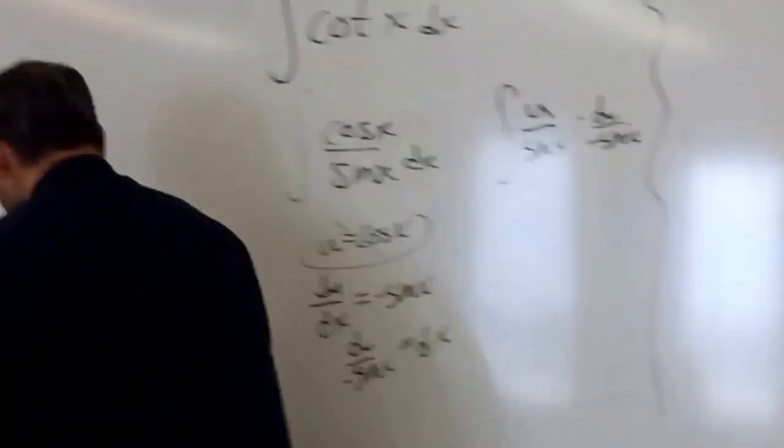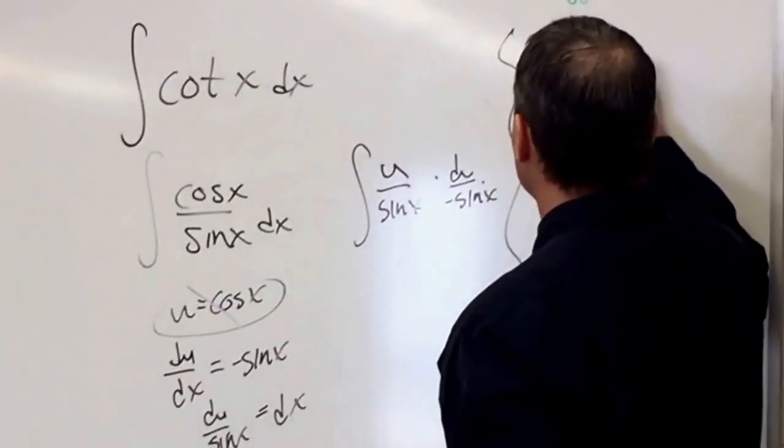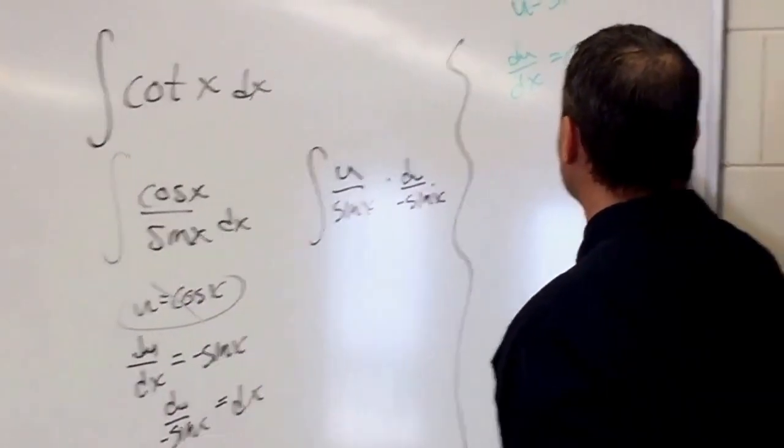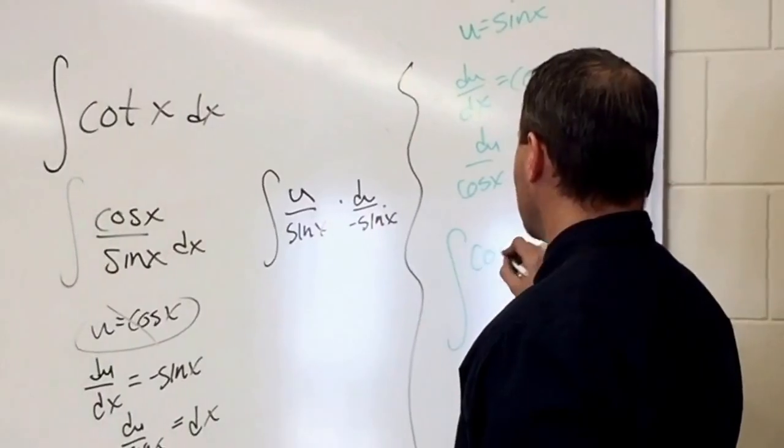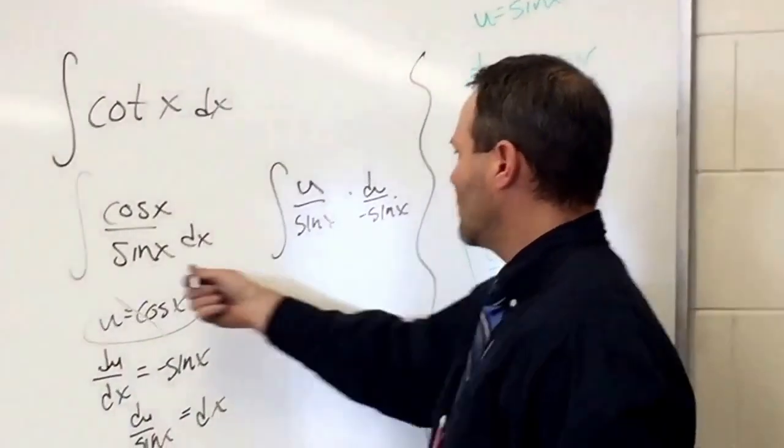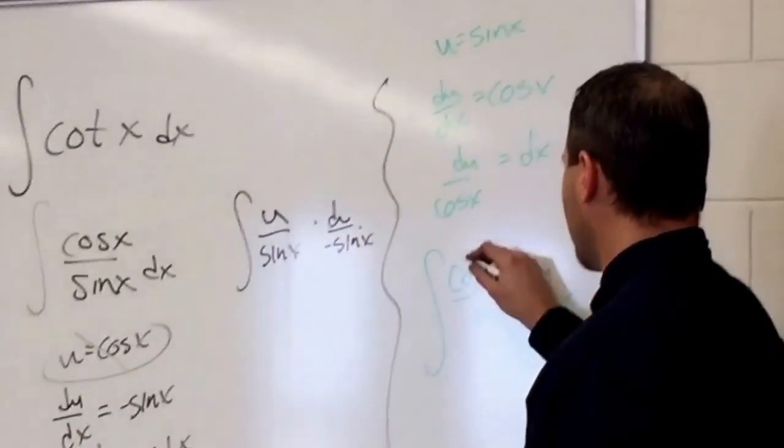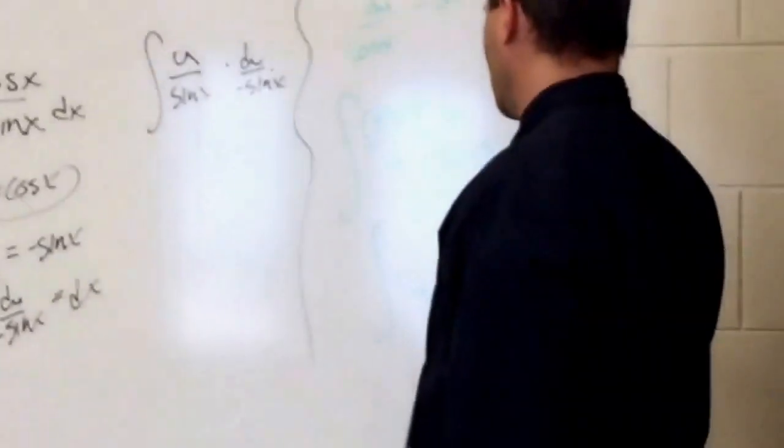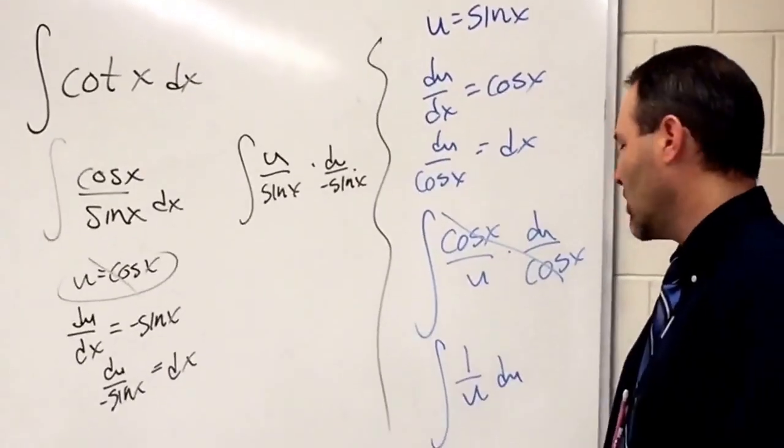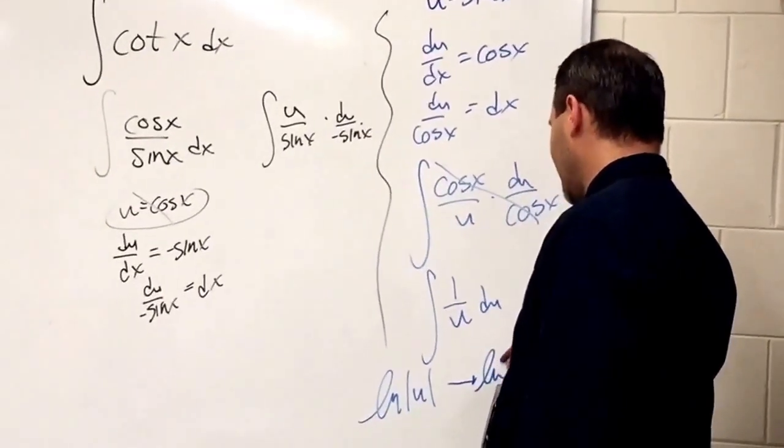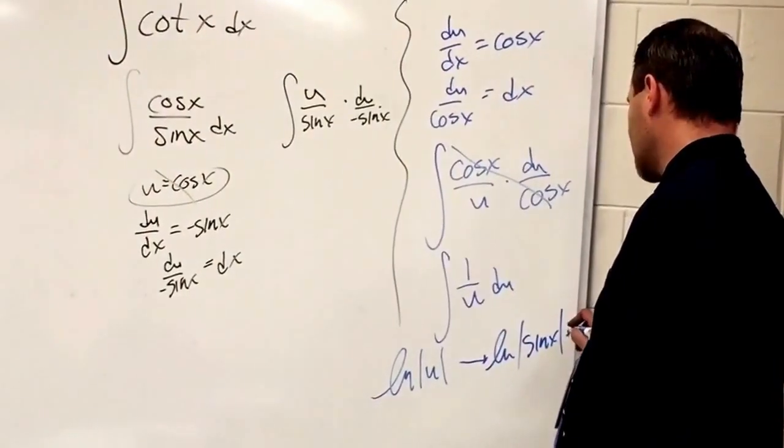We're going to choose the bottom, which is sine x. So it's the integral of cosine x over u. And dx is du over cosine x. Look at that. It's the anti-derivative of 1 over u du. What's that? For the anti-derivative of 1 over u, it's natural log absolute value of u. Natural log absolute value of u is sine x plus c.